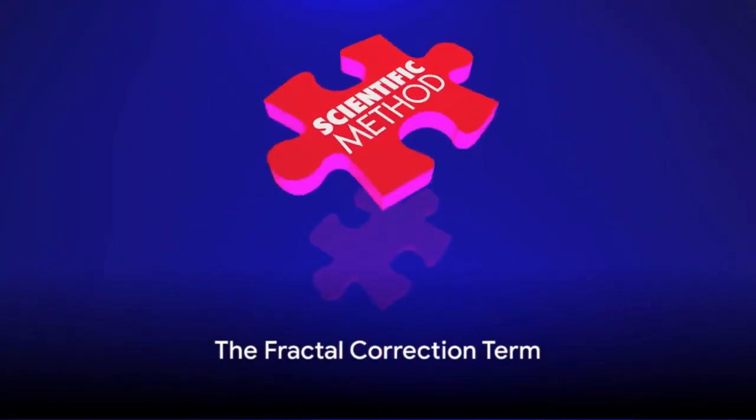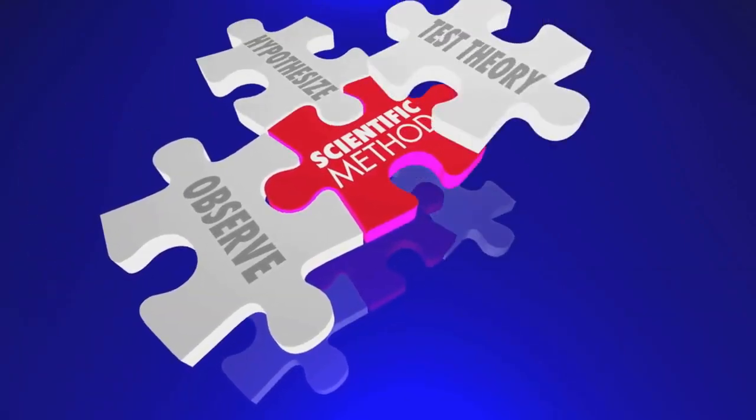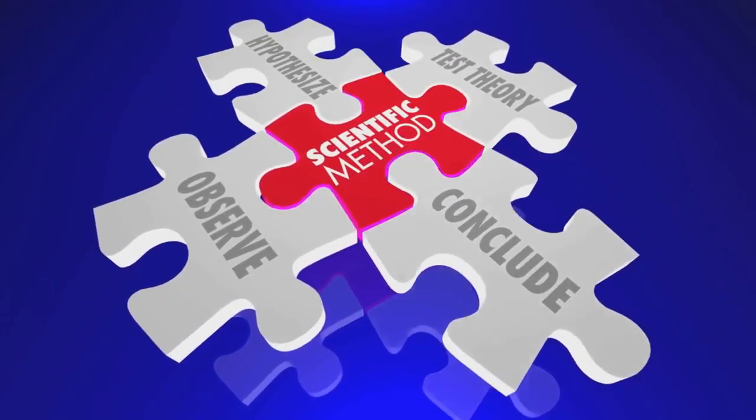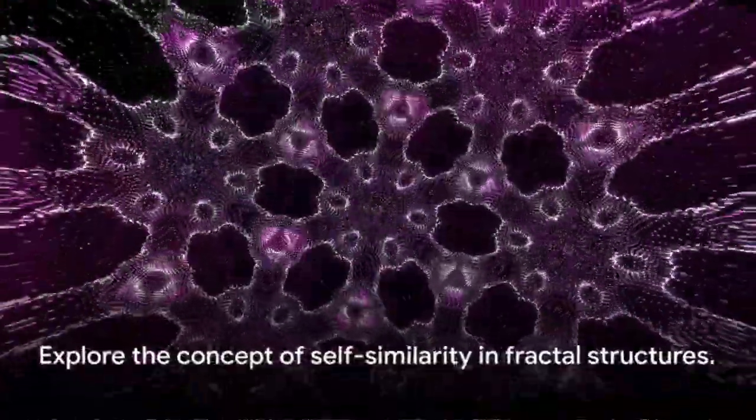The ψ_QFT(X,t) term, for instance, represents the quantum field theory component, while ψ_fractal(X,t) dM_Qs is the fractal correction term. This fractal term encapsulates the effects of a fractal potential term on the quantum field. It's the secret ingredient that brings a fresh perspective to the table, introducing the concept of self-similarity inherent in fractal structures.